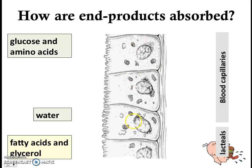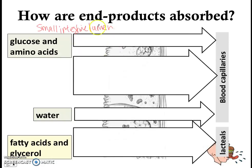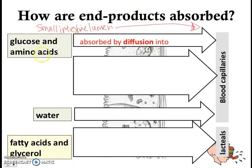This is the zoom-in. You'll see a row of epithelial cells because this is the epithelium. On the inside of the villus we have the blood capillaries and the lacteals. On the outside is the small intestine lumen. In the small intestine lumen we have all the end products of digestion. The question is: how are these end products absorbed from the small intestine lumen outside the villus to inside the villus?